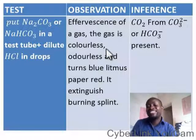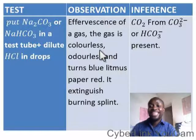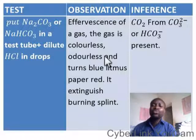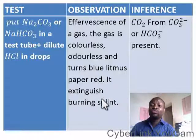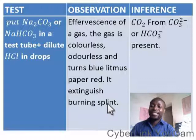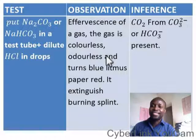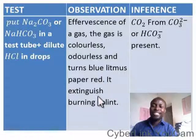Now, what are the characteristics of CO₂? Number one, CO₂ is a colorless gas. Number two, CO₂ is odorless. Number three, CO₂ turns blue litmus red. Number four, CO₂ extinguishes a burning splint. So, looking at the characteristics: number one, colorless; number two, odorless; number three, turns blue litmus red; number four, extinguishes burning splint.